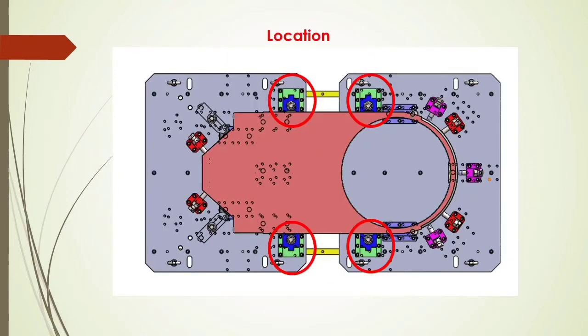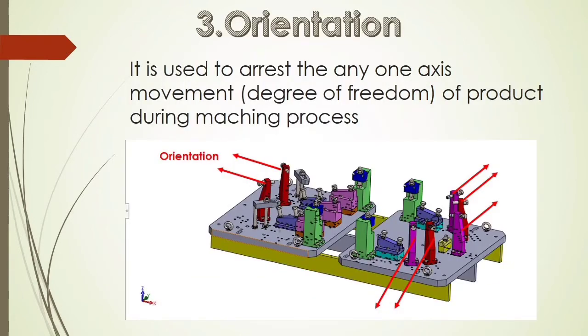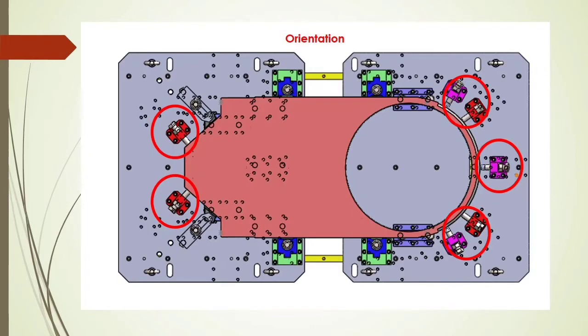Here you can see examples of the locations we are using in the fixture. Orientation also arrests the degree of motion in any one direction during the machining process. These highlighted regions are used as orientation in the fixture.